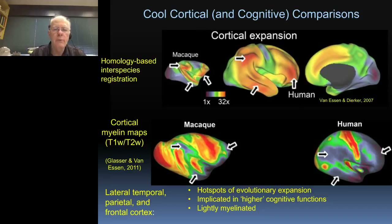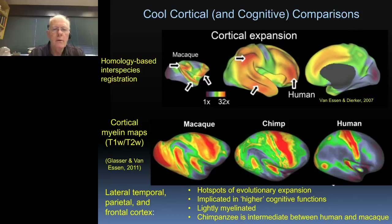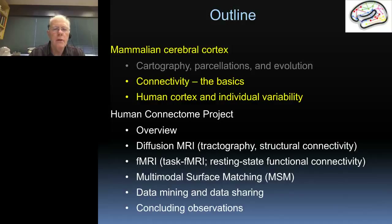They have a lot more synapses, and that's used for essentially giving increased computational horsepower. That takes us to the next topic of cortical connectivity.